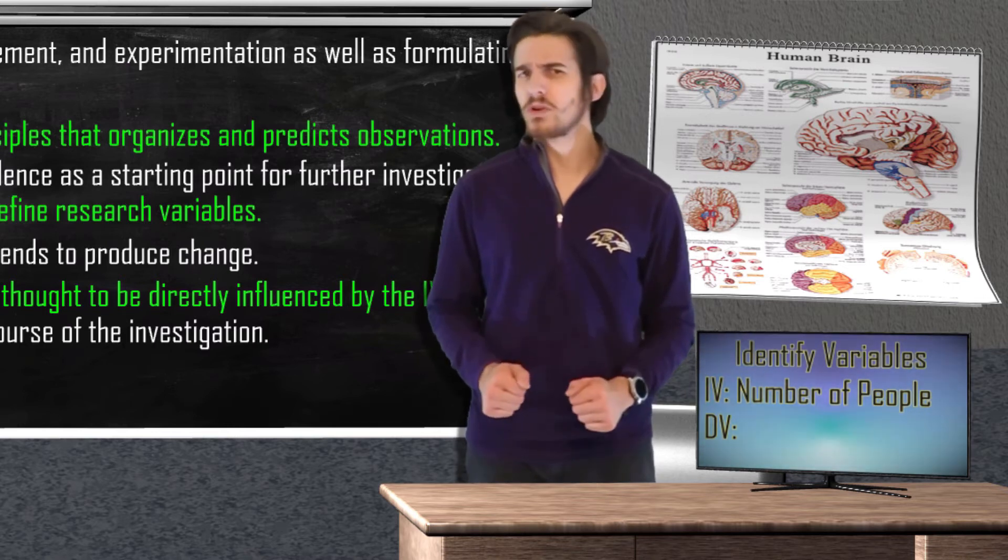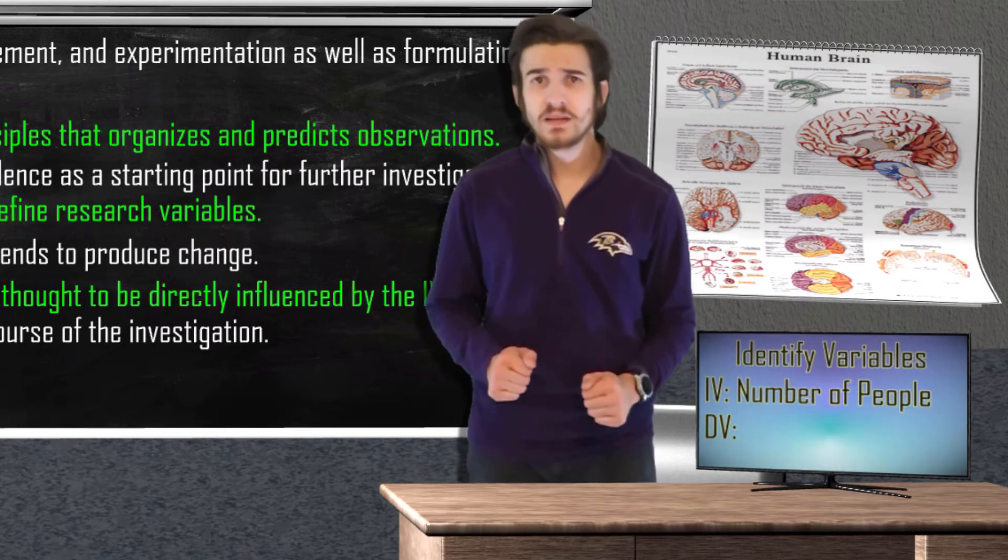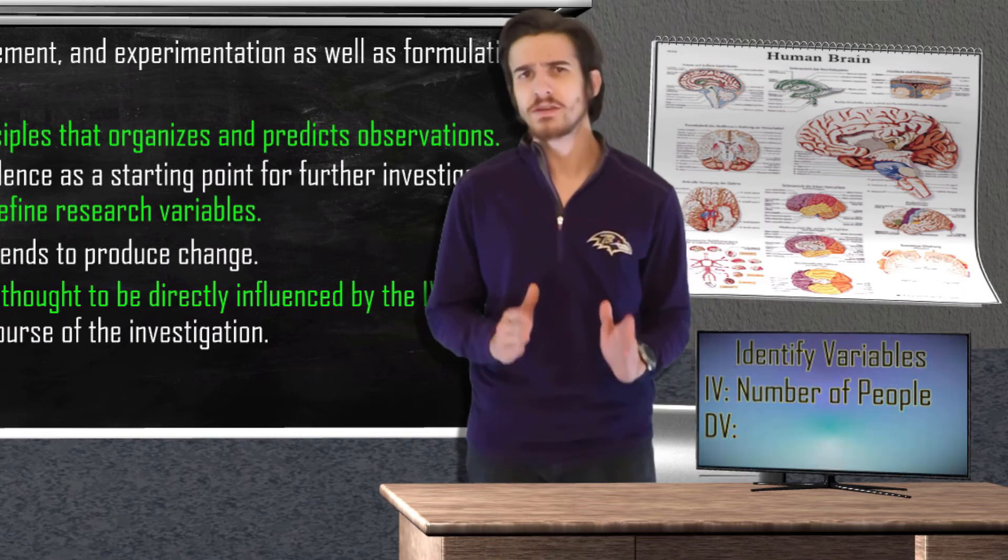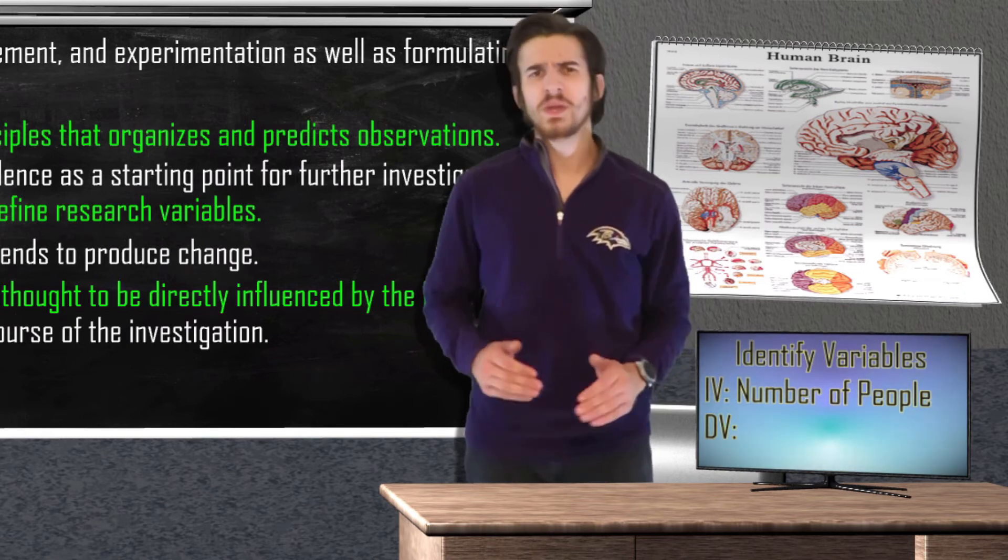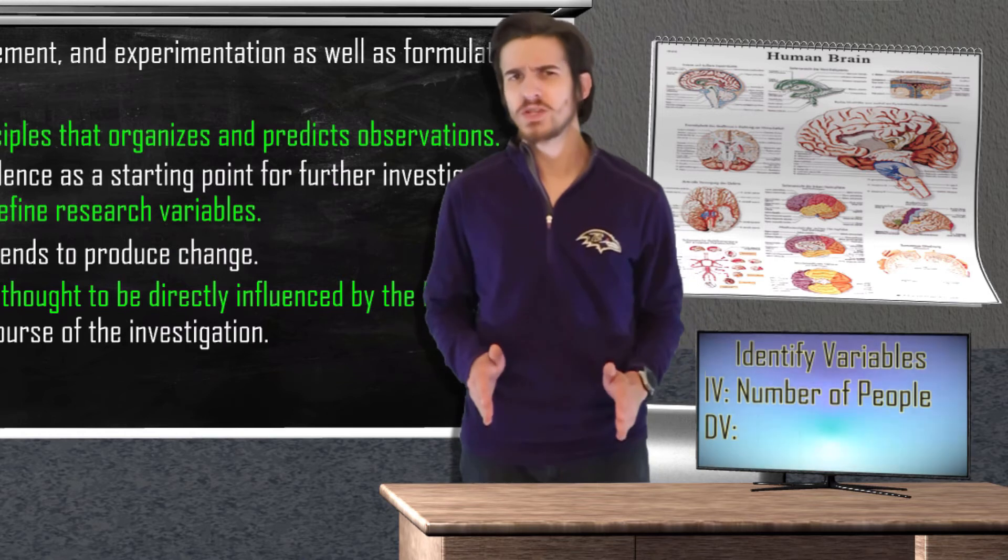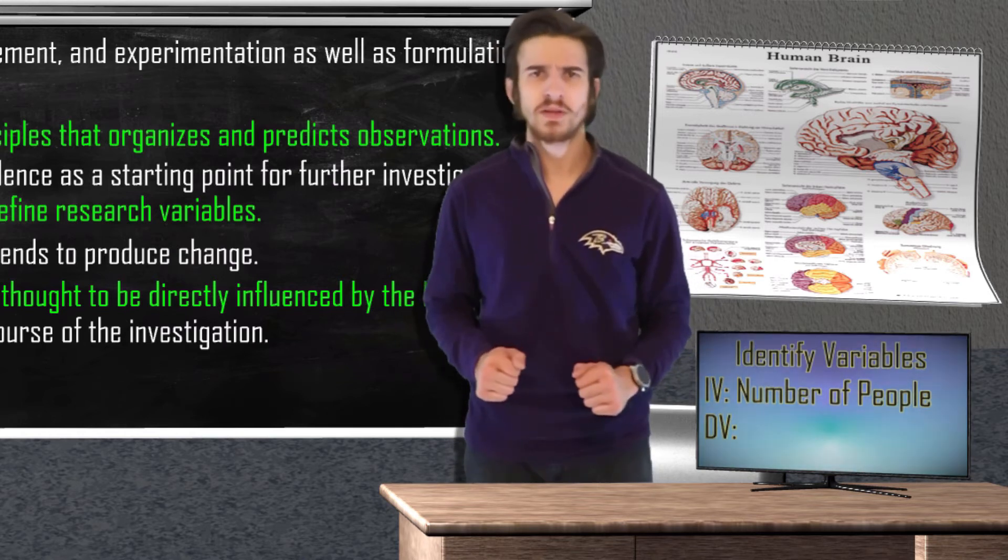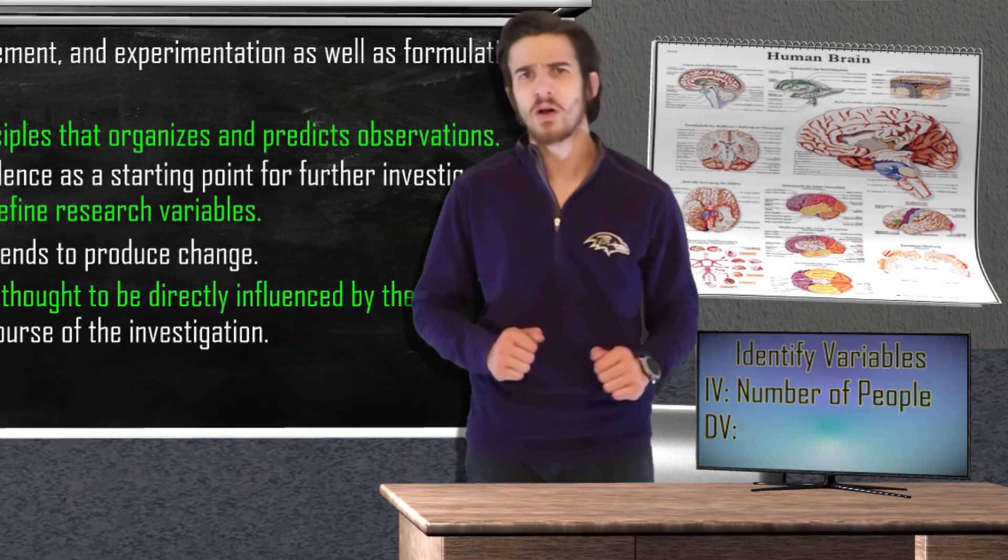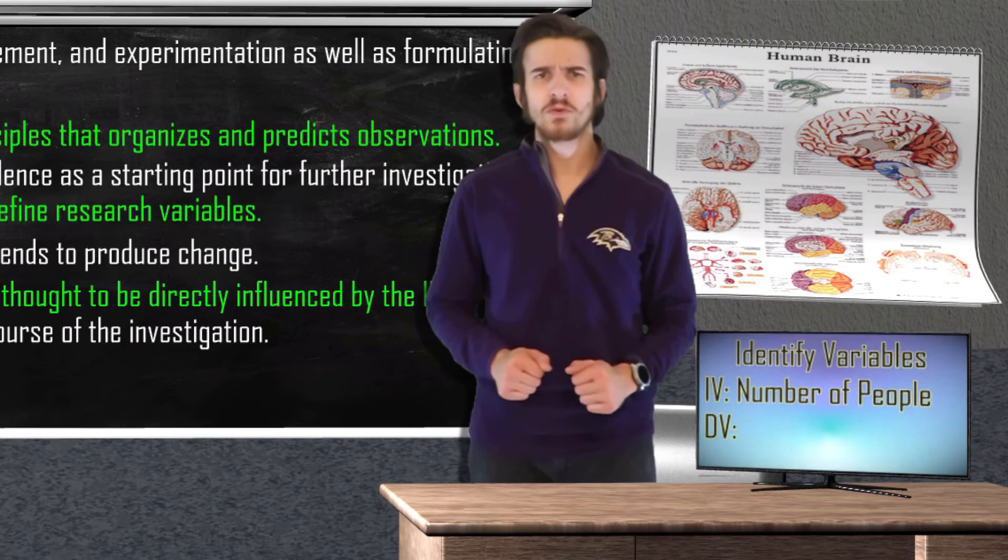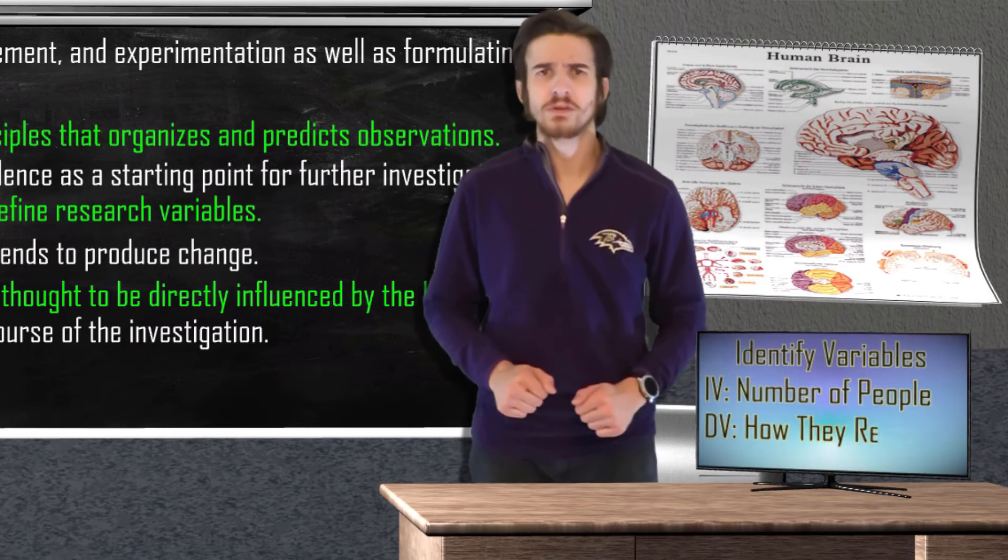Now how about our dependent variable? This is our variable that we are looking to measure a change in. We are hoping that our manipulated independent variable will cause a direct change in our dependent variable. We cannot necessarily control how an individual will react to a distressed bystander, but for the sake of our experiment, we can control how many people are present when the distressed event occurs. So our dependent variable will be how our subjects react to the distressed woman.